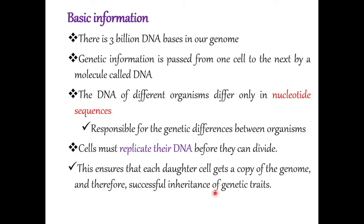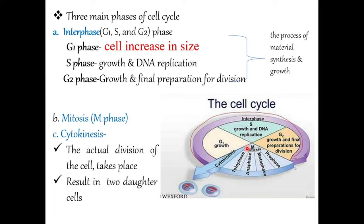Before we see the detail of DNA replication, let us see the cell cycle — how cells can be divided and what the stages are. There are three main phases of the cell cycle. The first phase is interphase. In interphase, there is G1 (Gap 1) phase, S (Synthesis) phase, and G2 (Gap 2) phase.